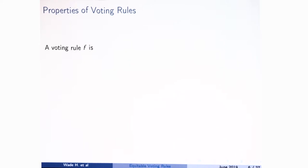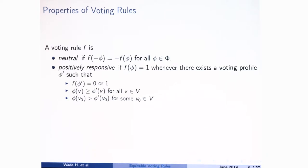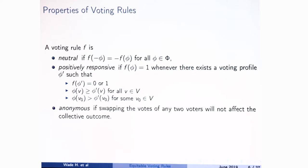Formally: neutrality says we don't care about the names — minus one and one — we could flip them around and the outcome should be flipped. Positive responsiveness: the important part is that if we're in a tie situation and somebody changes their preference towards one, then instead of the outcome being indifference, the outcome should be that one wins. A rule is anonymous if we can swap the votes of any two voters and that doesn't change the outcome at all.